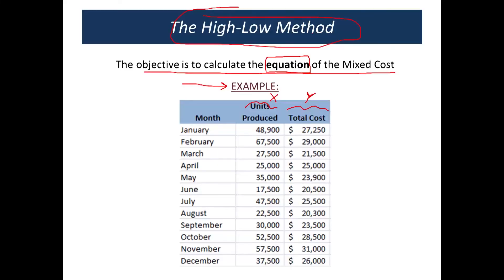Going back to the computer: which is the highest x? February — that's the high. Which is the lowest x? June — that is the low.